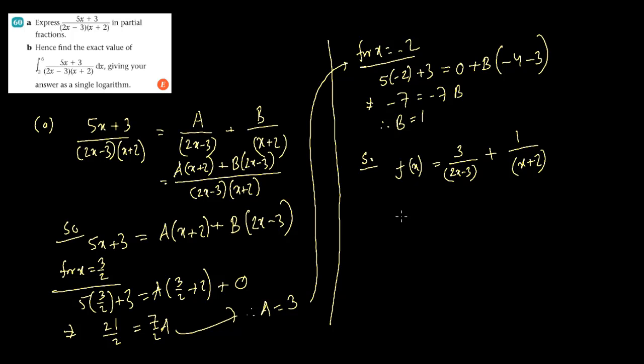Question number B would be doing the same sum using the partial fraction and using the fundamental rule of calculus. So integration from 2 to 6 of this thing, meaning the one that we just broke down. So let me write down the new version, 3/(2x-3) plus 1/(x+2) dx.